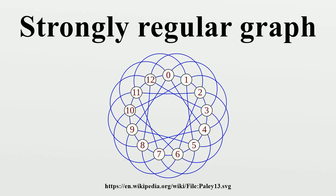Since each node has degree K, there are edges remaining for each level 1 node to connect to nodes in level 2. Therefore, there are edges between level 1 and level 2. Nodes in level 2 are not directly connected to the root, hence they must have mu common neighbors with the root, and these common neighbors must all be in level 1. There are nodes in level 2, and each is connected to mu nodes in level 1. Equating the two expressions for the edges between level 1 and level 2, the relation follows.